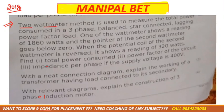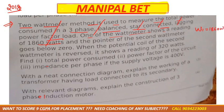In this problem, the 2 wattmeter method is used to measure the total power of a 3-phase balanced star-connected lagging power factor load. One of the wattmeters shows a reading of W1 = 1860 watts, and the pointer of the second wattmeter W2 goes below zero.